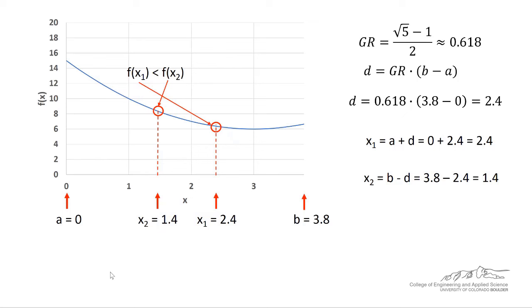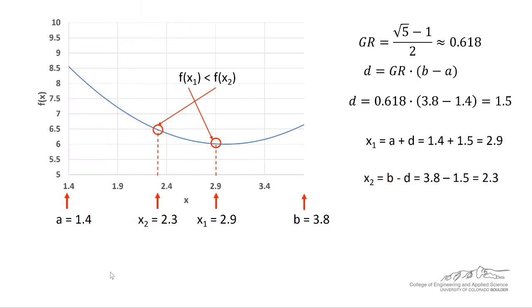Let's do another iteration. We calculate d to be 2.4. We calculate our new x1, our new x2. In this case, f(x2) is less than f(x1), so we eliminate everything to the left of x2, and in this case, x2 then becomes our new lower bound, which is a. We move on to the next iteration, and we calculate the new parameters. Here, we see that f(x2) is also less than f(x1), like the previous iteration. We eliminate everything to the left of x2, and we keep everything to the right. x2 becomes the new a.